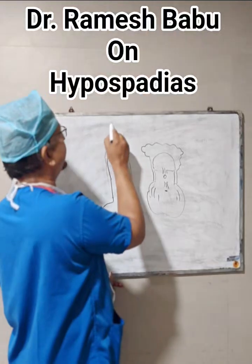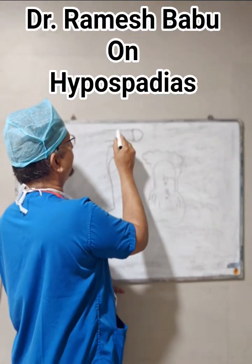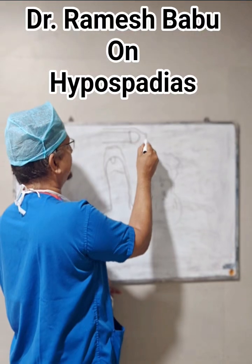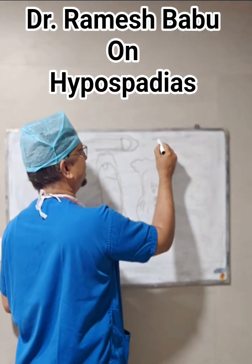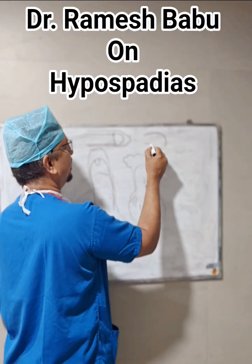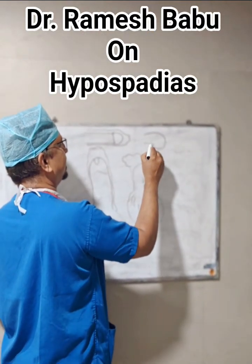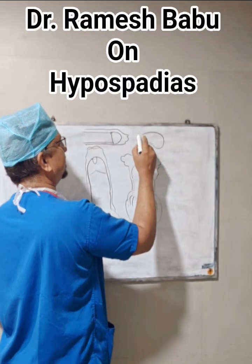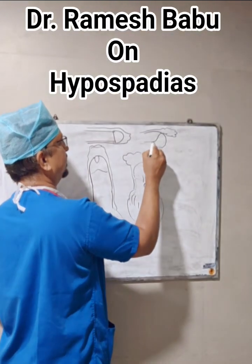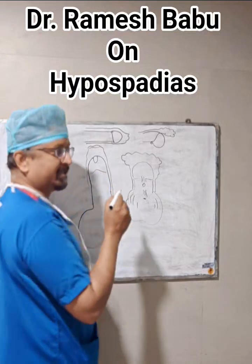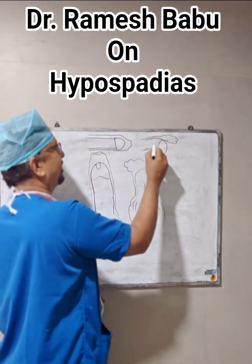The normal penis is straight with a complete foreskin, whereas in hypospadias the penis is bent and the foreskin only covers the top. The glans is exposed underneath, and when the patient passes urine, the stream goes downwards rather than forwards.